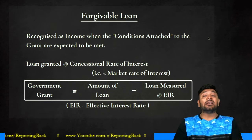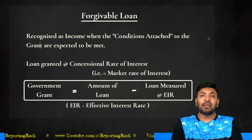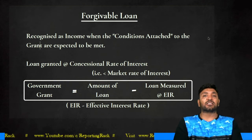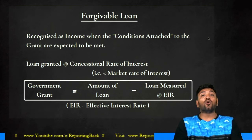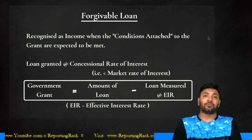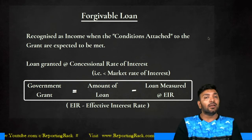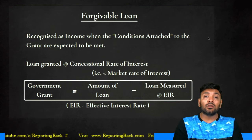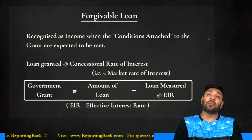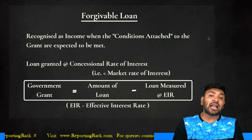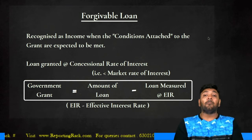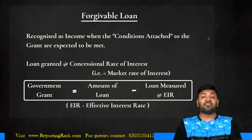What if a loan is granted at a concessional rate? For instance, if the market rate is 12% but the government provides a loan under NABARD for agricultural purposes at only 4%, there is an 8% discount. This 8% discount should also be recognized as a government grant. The government grant equals the loan amount minus the loan measured at the effective interest rate.